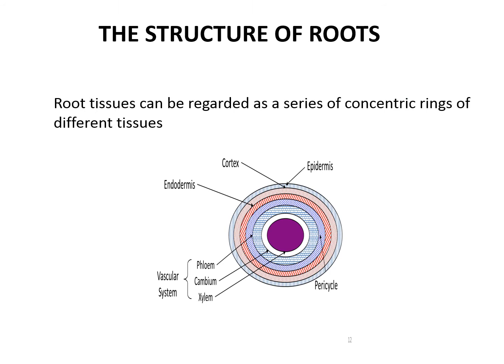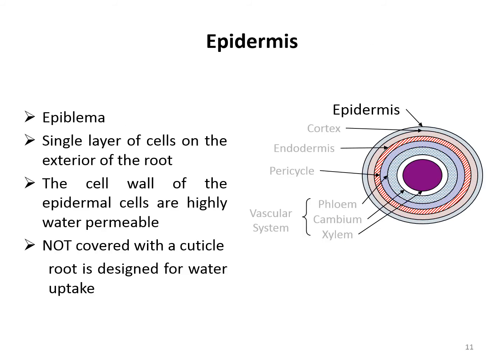The detailed structure of dicot or monocot roots can be understood from the study of transverse sections of young seedling roots, like gram, pea, bean, etc. In roots, tissue can be regarded as a series of concentric rings of different tissues, such as epidermis, cortex, and vascular cylinder. Normally the outer layer of cells is called epidermis, but in the case of roots we call it epiblema — 'epi' means outer and 'blema' means covering. It serves as a sort of skin and protects the tissue. Tiny hair-like extensions called root hairs grow from the epidermis.